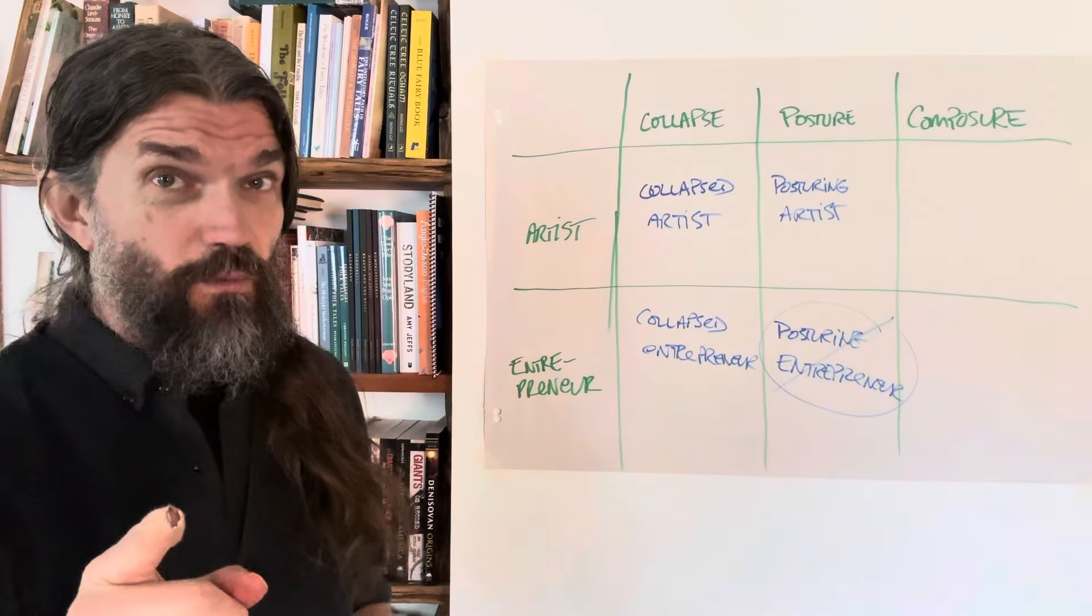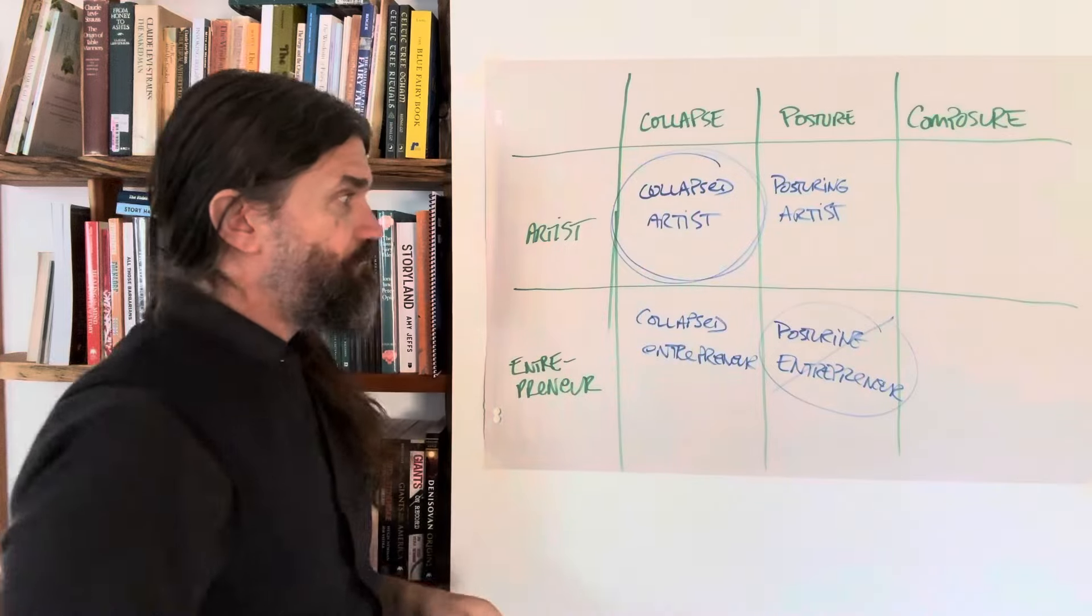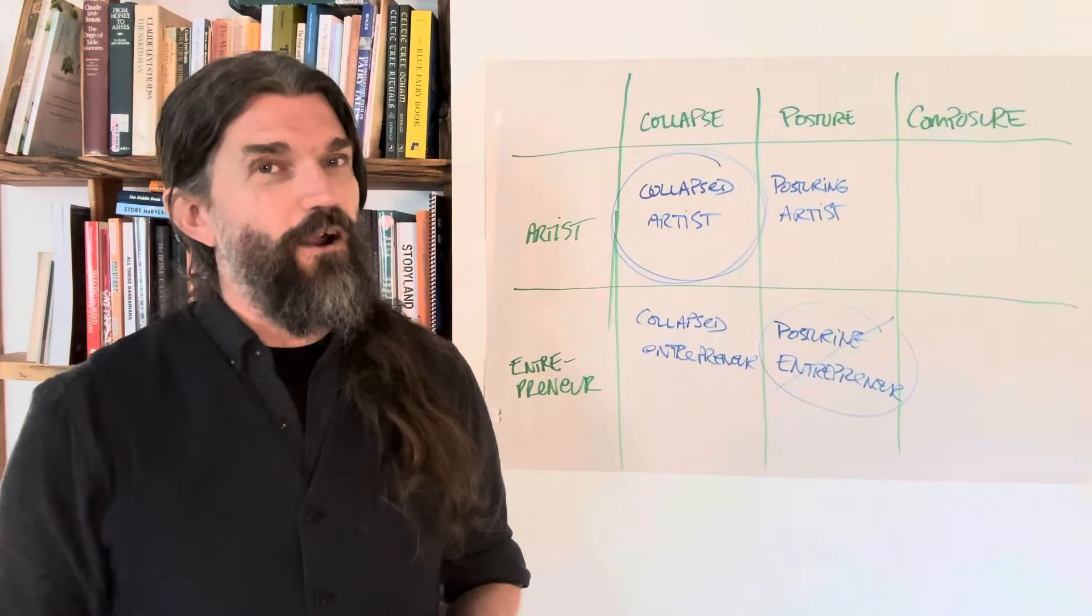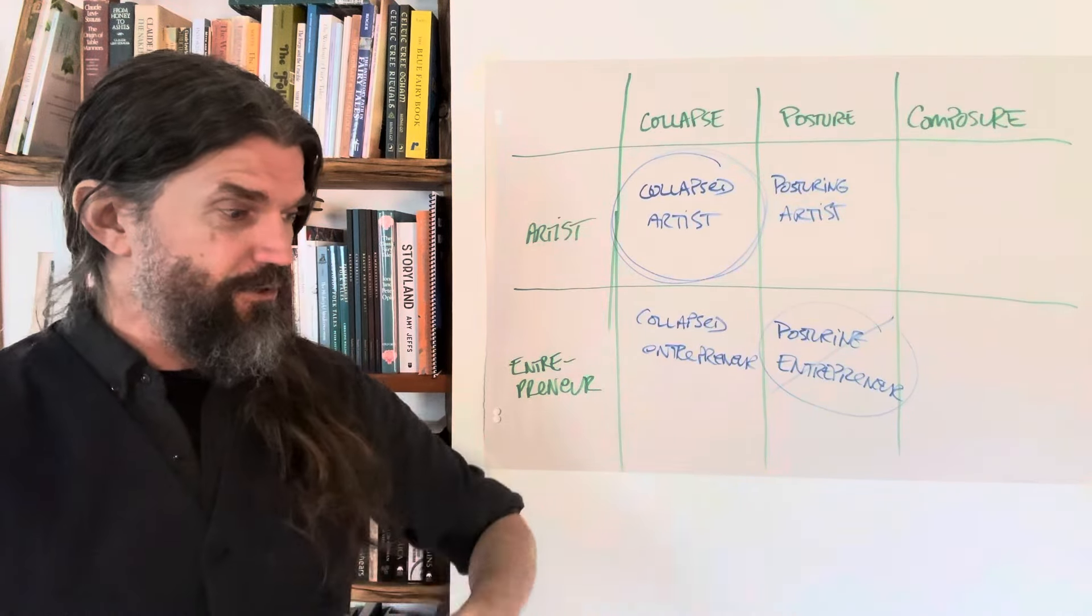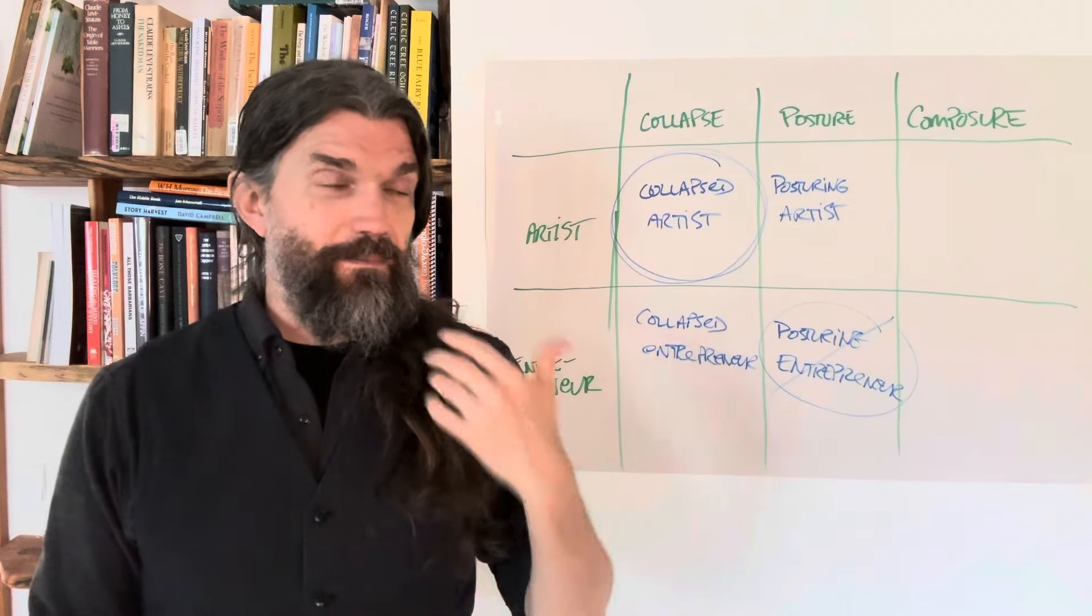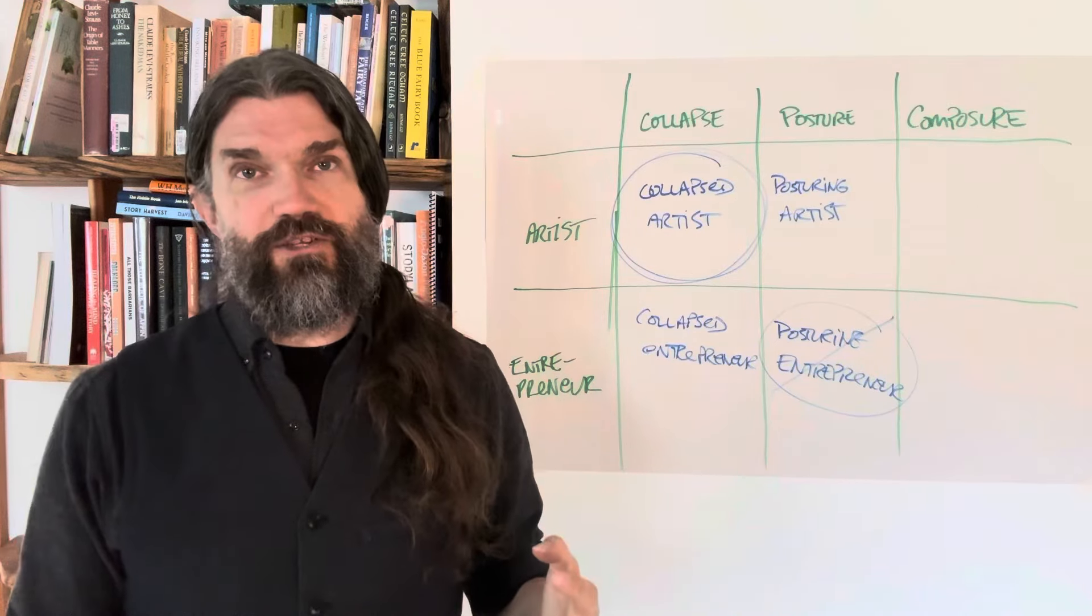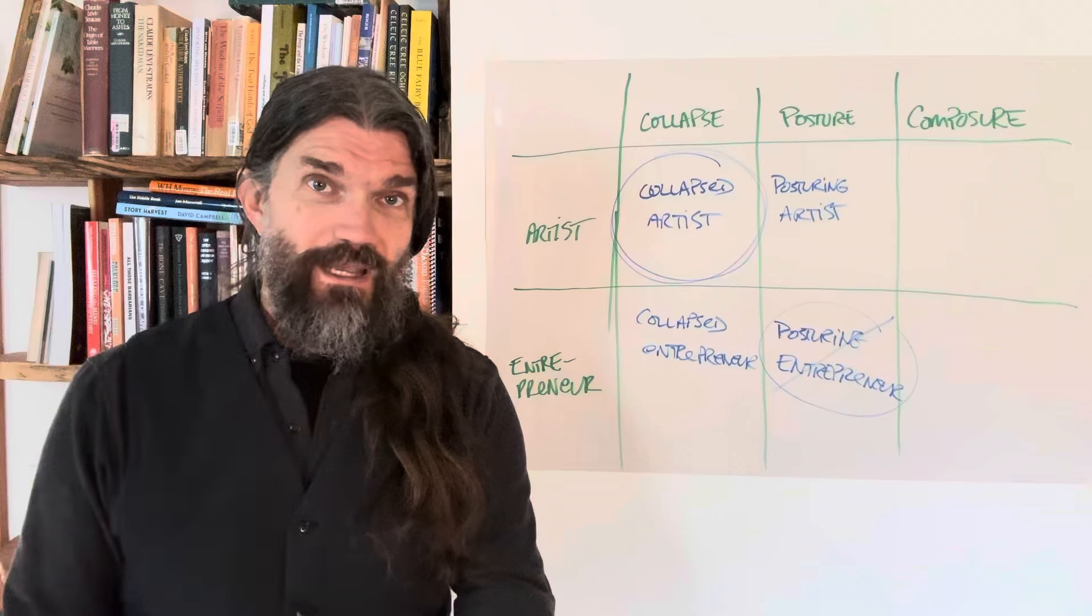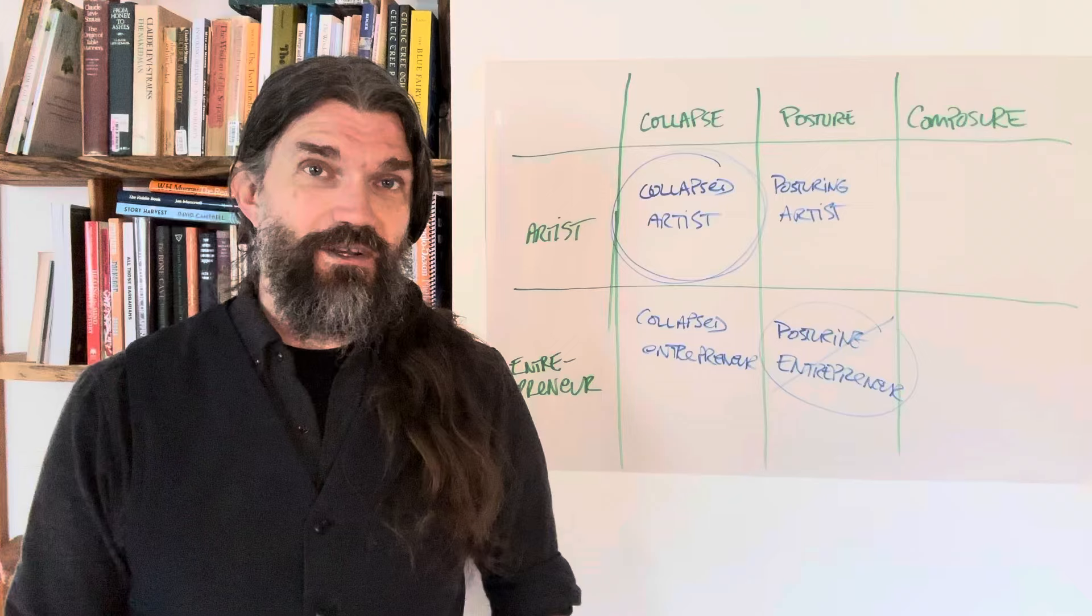And most of you watching this video, you are here. You're not here. Most of you watching this are artists more than you're entrepreneurs. Meaning, your center of motion comes from being inspired about what you've got - this healing art, this coaching business, this work that you want to do. Can't I just do the work and somebody else does the marketing for me? Can't I just get out there and help people? That's the collapsed artist.